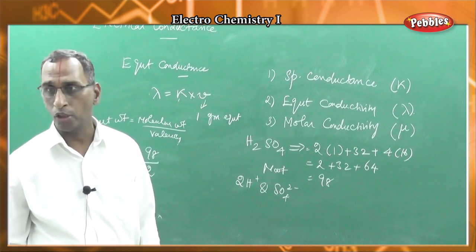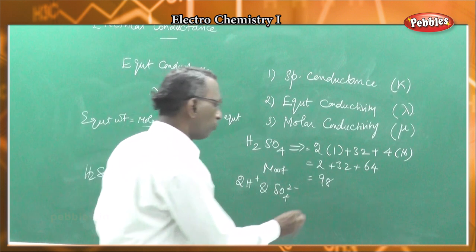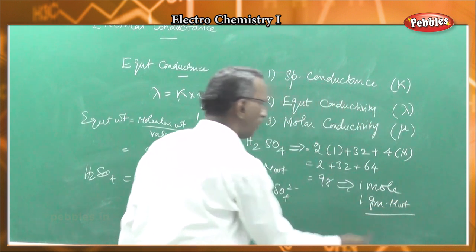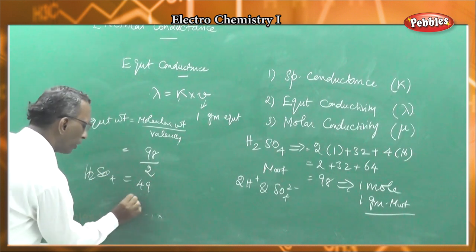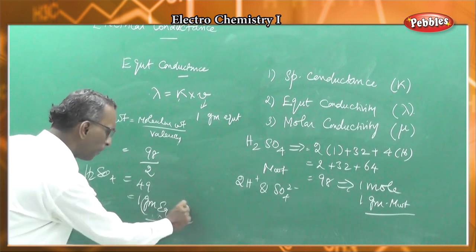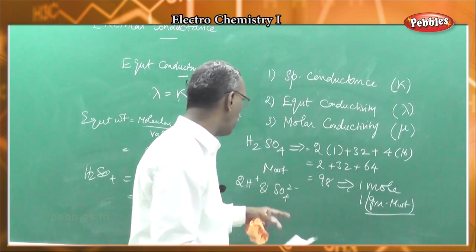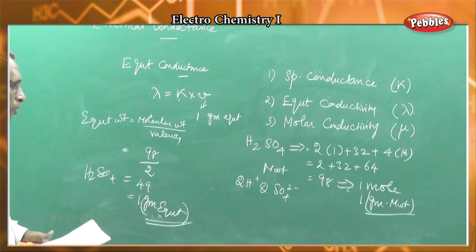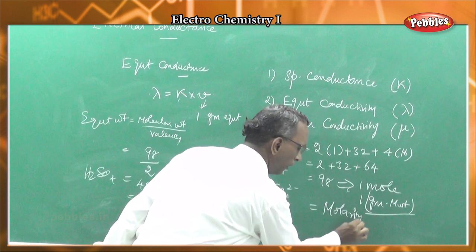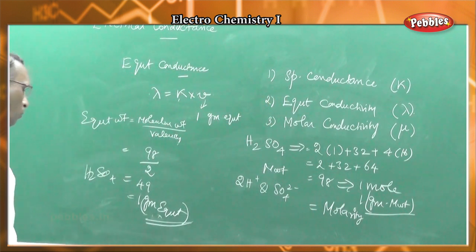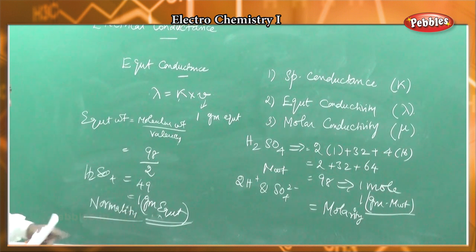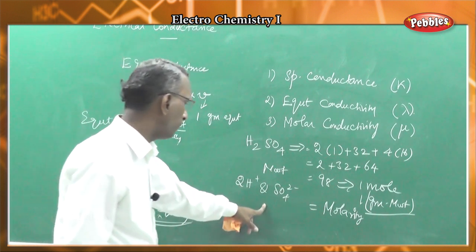The molecular weight of sulfuric acid is 98, so 98 grams is 1 mole — that is 1 gram molecular weight. And 49 grams is 1 gram equivalent, since equivalent weight is 49. Normality is the number of gram equivalents per liter. Gram equivalents per liter is normality.